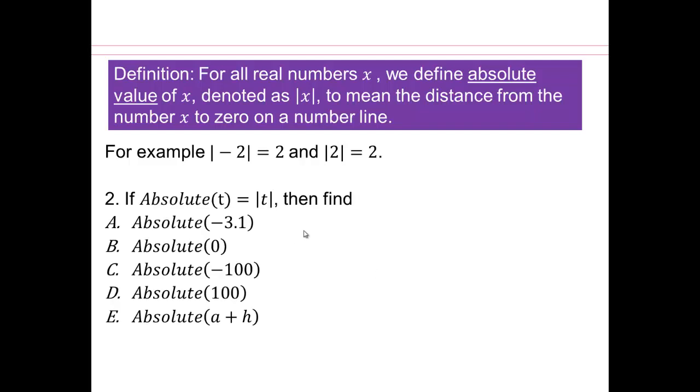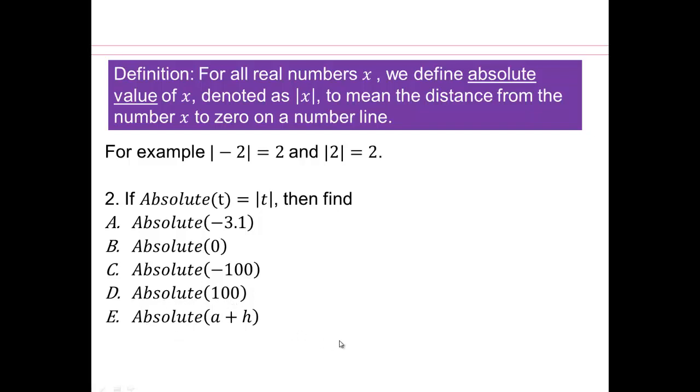So we're going to ask you to evaluate the following. If we define the absolute value function as absolute of t equals absolute value of that number, then evaluate absolute value of negative 3.1, absolute value of 0, absolute value of negative 100, absolute value of 100, absolute value of a plus h. So pause the video and try it on your own. All right. If you've come back from pausing the video, let's see what you got.